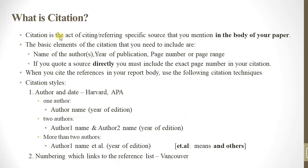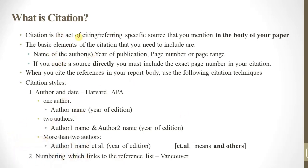What is a citation? A citation is the act of citing or referring to a specific source that you mention in the body of your paper. The basic elements of a citation that you need to include are the name of the authors.